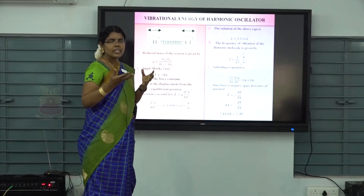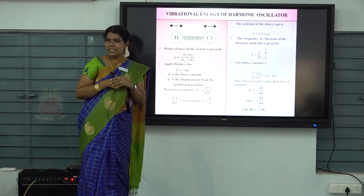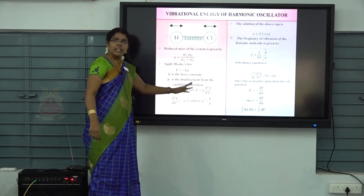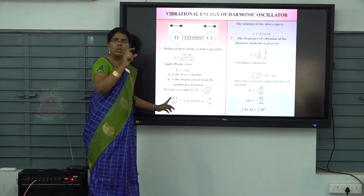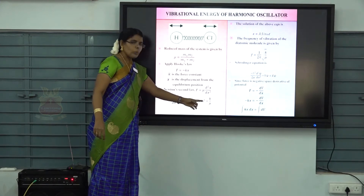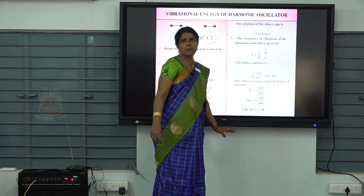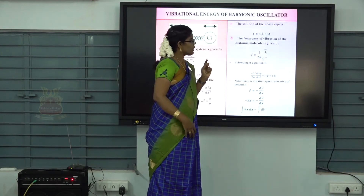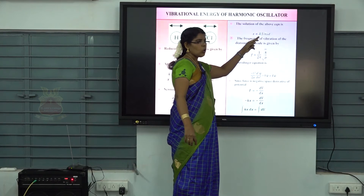Hooke's law: within the elastic limit, stress is directly proportional to strain, giving F = −kx. Setting this equal to F = μ(d²x/dt²) and equating the two equations gives a simple differential equation. Taking ω² = k/μ, and using ω = 2πf, we get the frequency of vibration: f = (1/2π)√(k/μ), where k is the force constant and μ is the reduced mass. The solution of the differential equation is x = A sin(ωt).